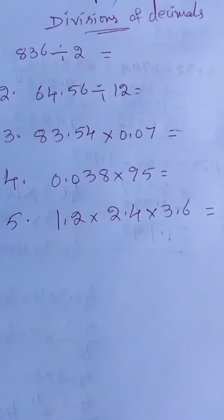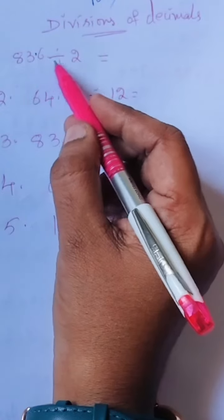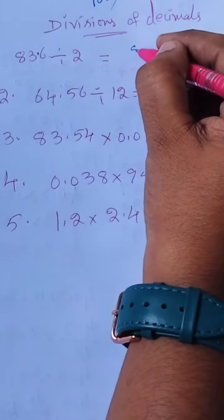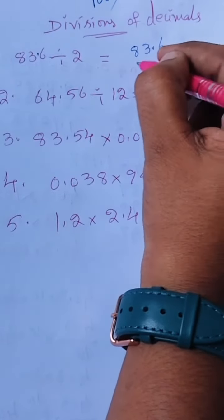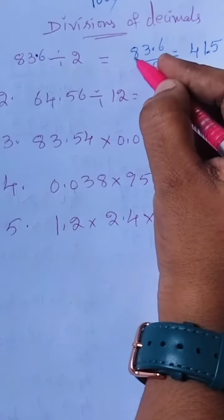Hello everyone, welcome to my channel Book of Science. Today I am teaching about sixth class math decimals, specifically divisions of decimals. So, 83.6 divided by 2, it means 83.6 by 2, so the answer equals 4.